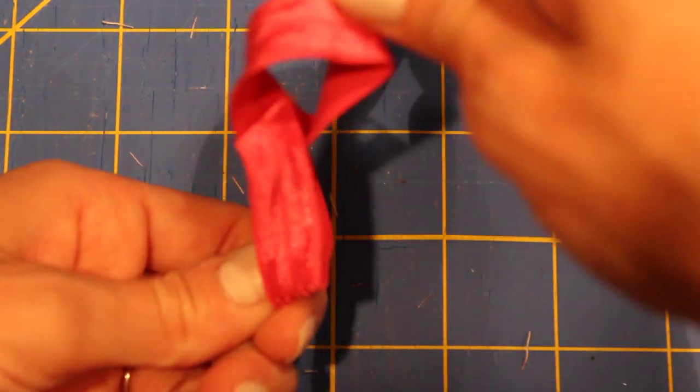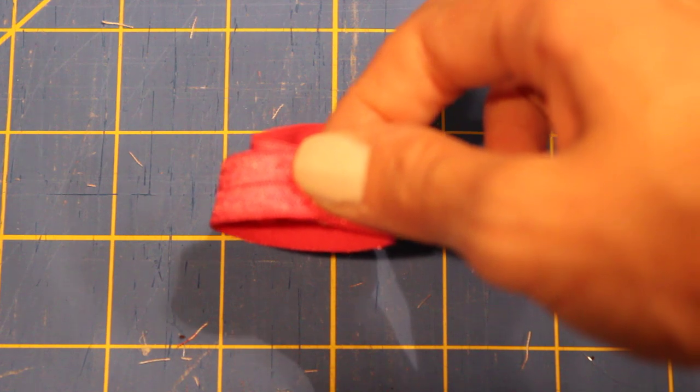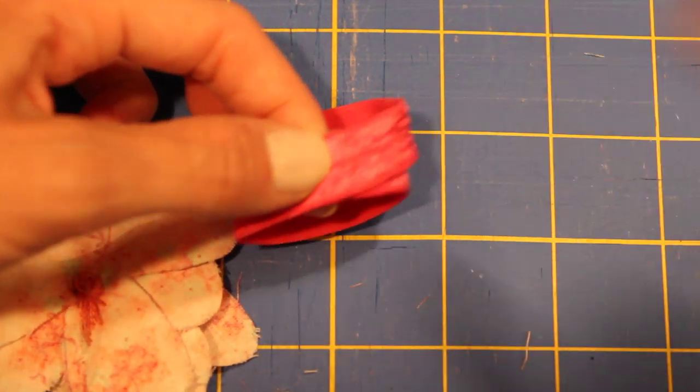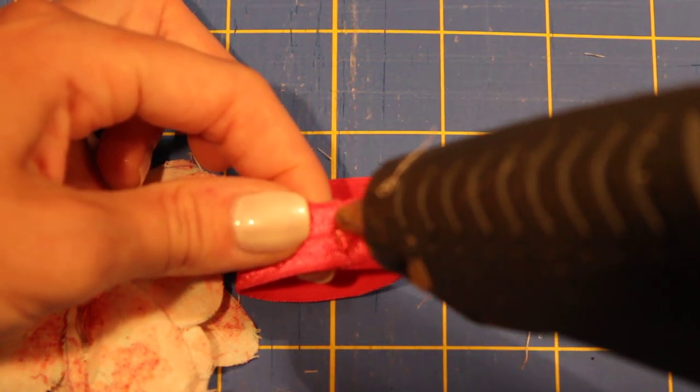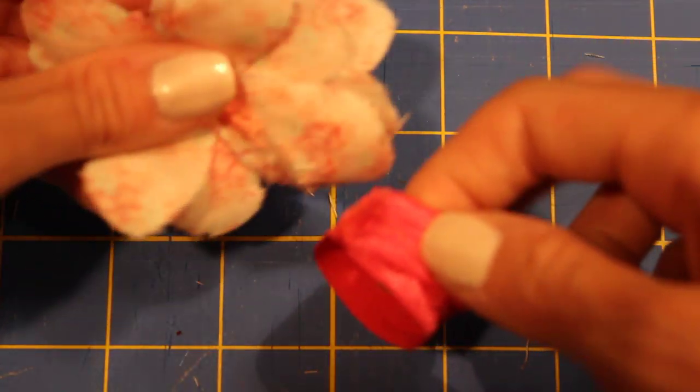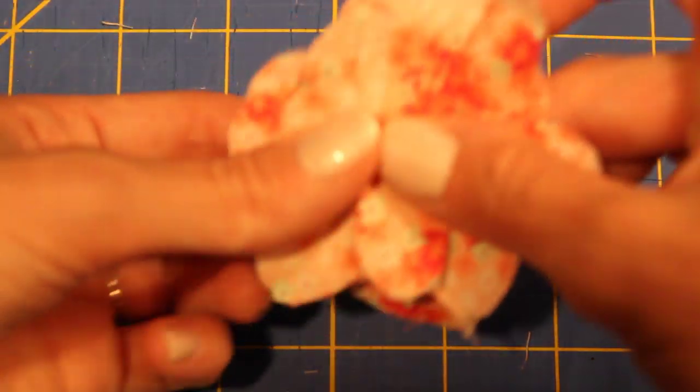This will go on the ankle. This will go under the foot. So now what we're going to do is cover that seam with the flower that we made. We are just going to put a dab of glue here and where that seam is. Then we'll press the flower on in the center and hold it so it stays.